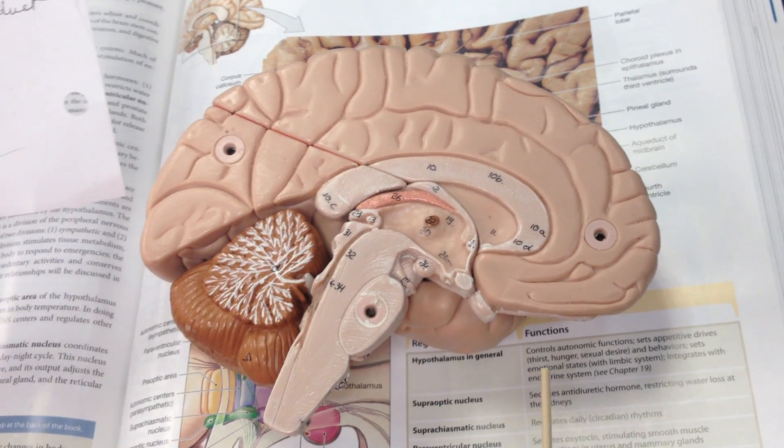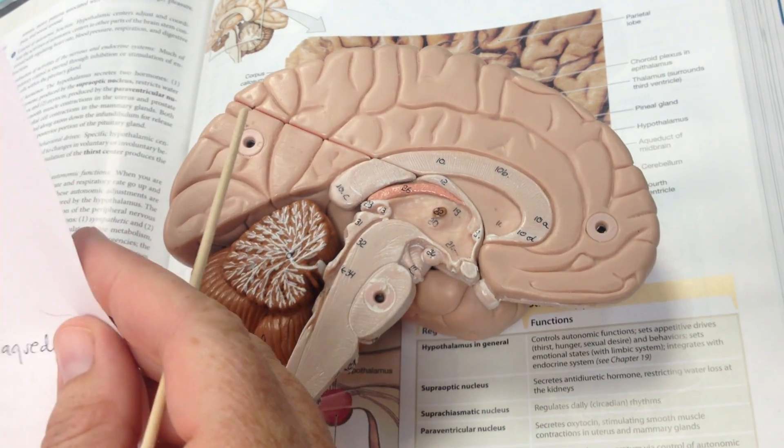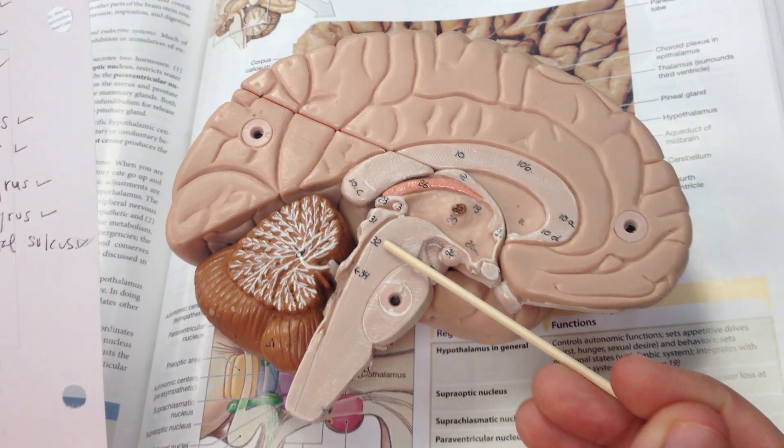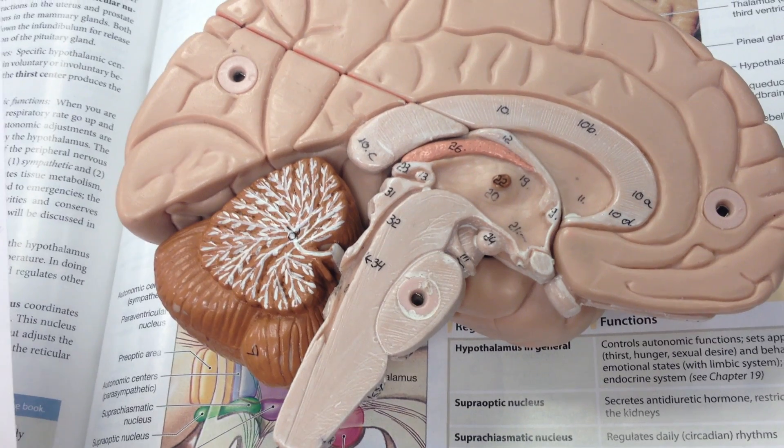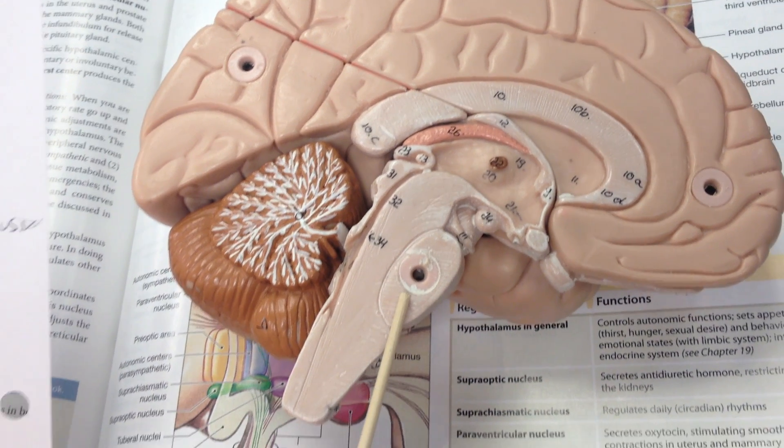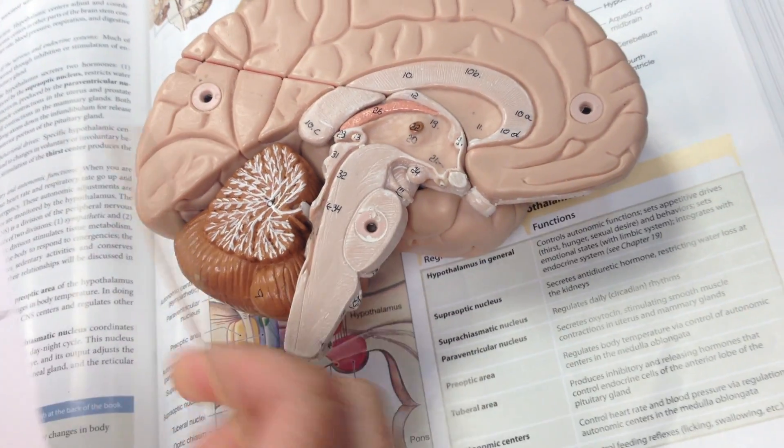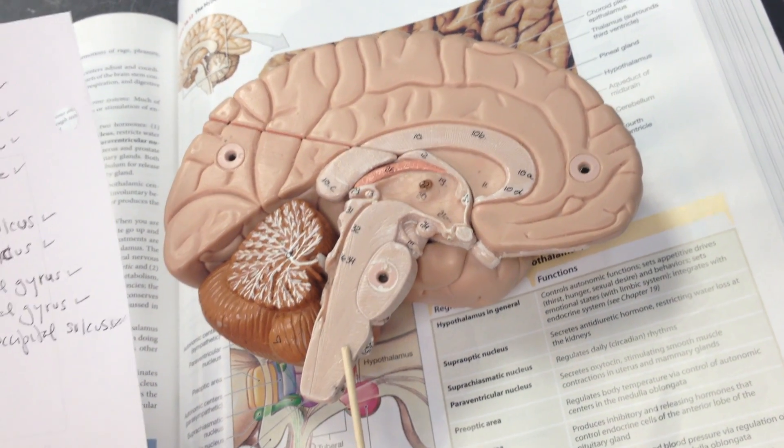The cerebral peduncles, which is number 32 and 33 on the other side, the pons, the cerebellar hemispheres, which is right and left of the cerebellum, and this is the medulla oblongata.